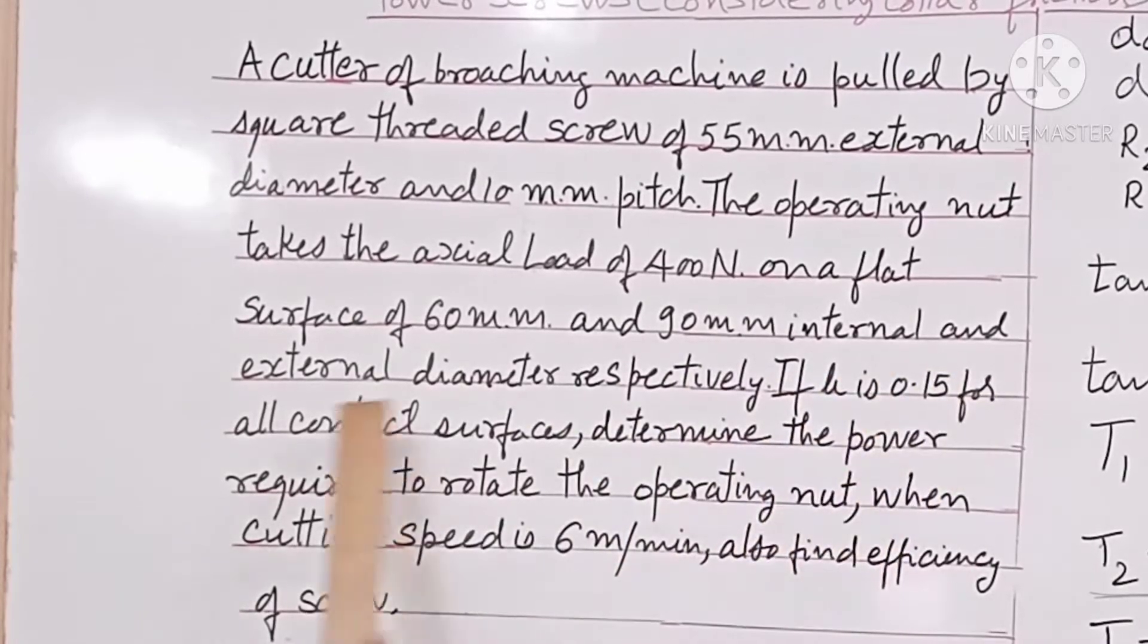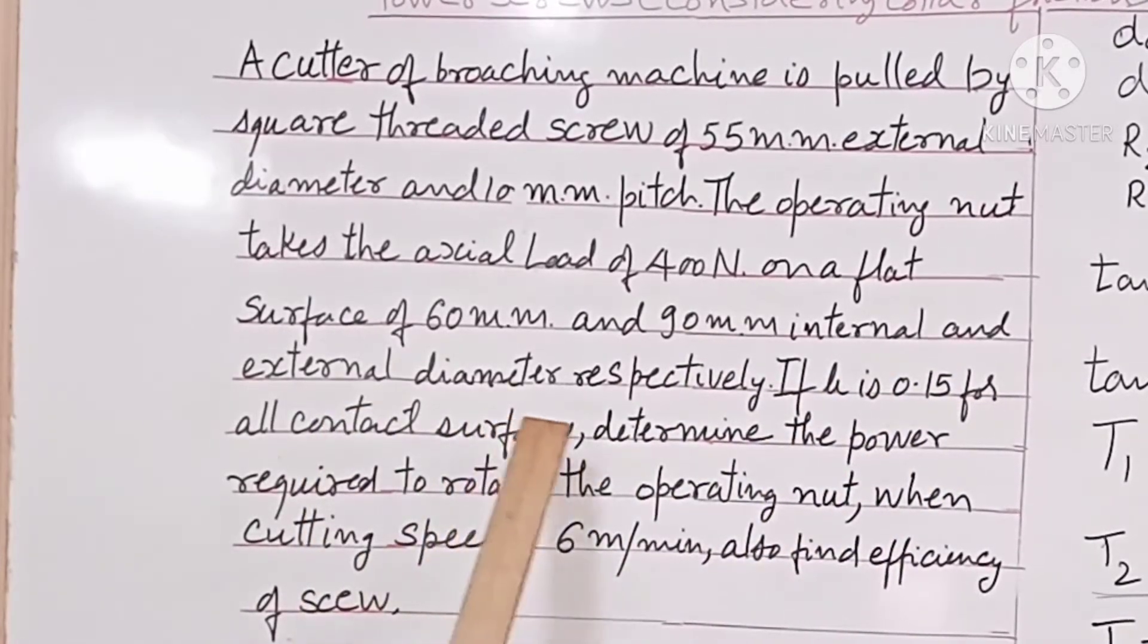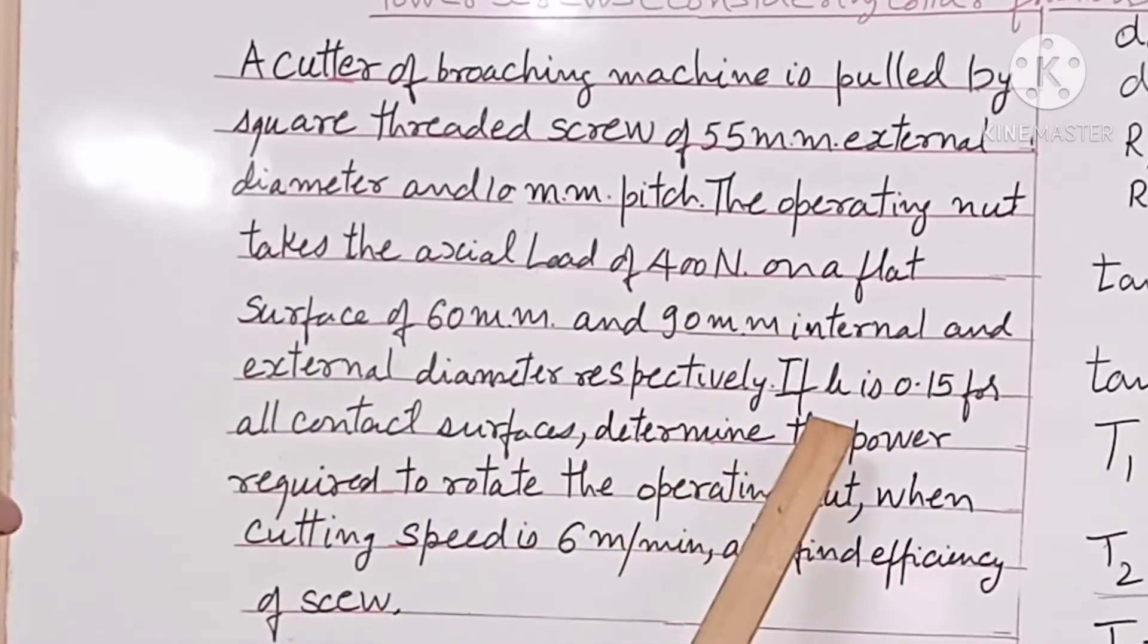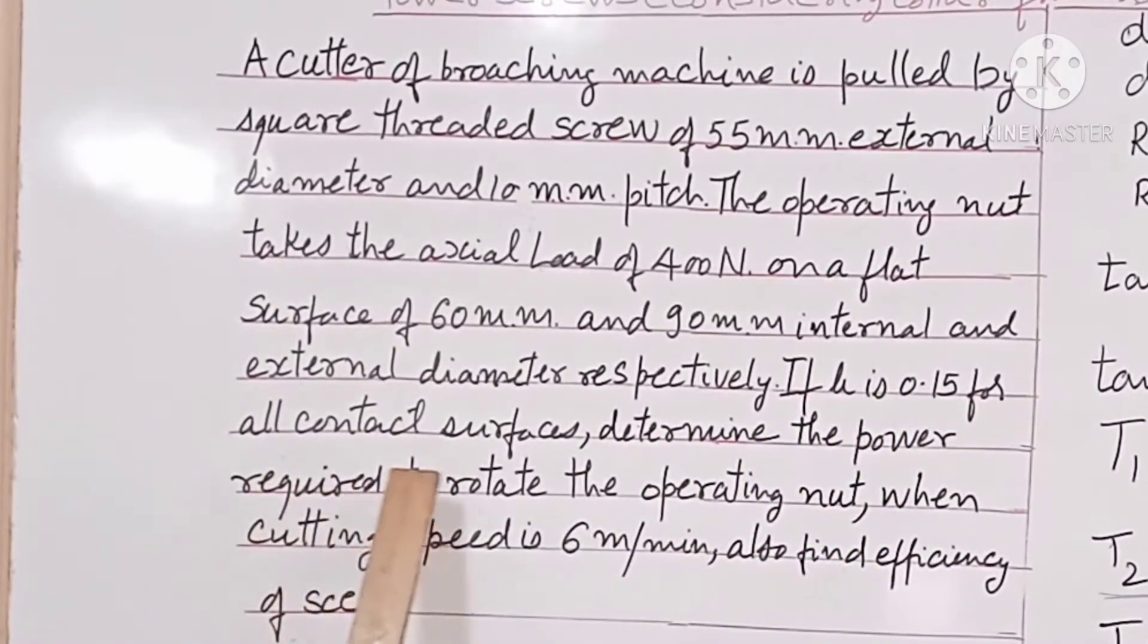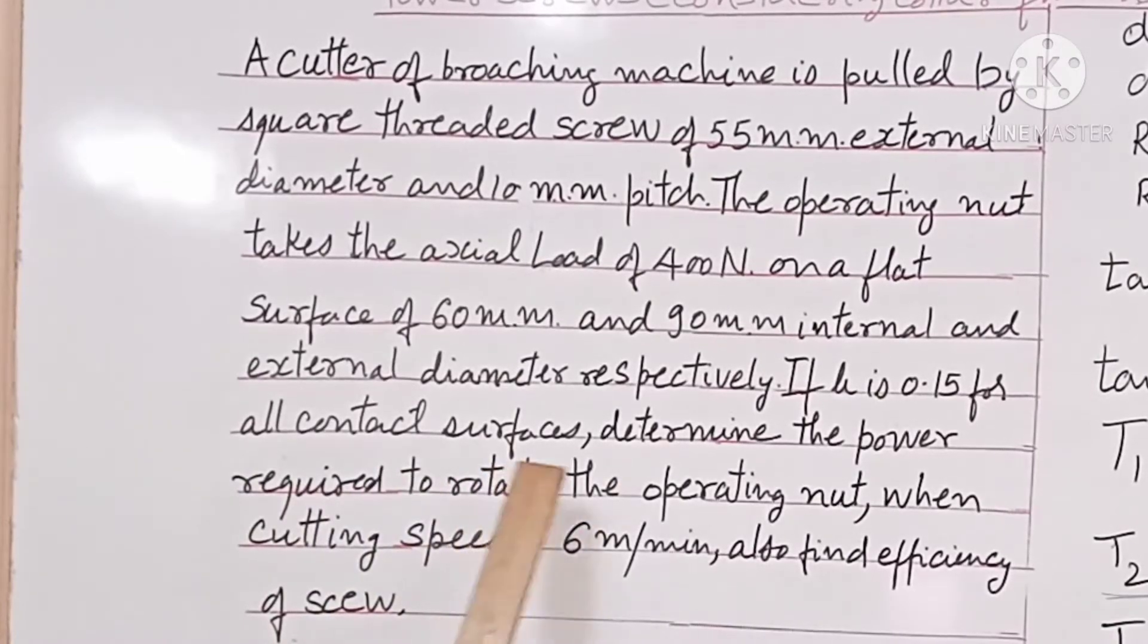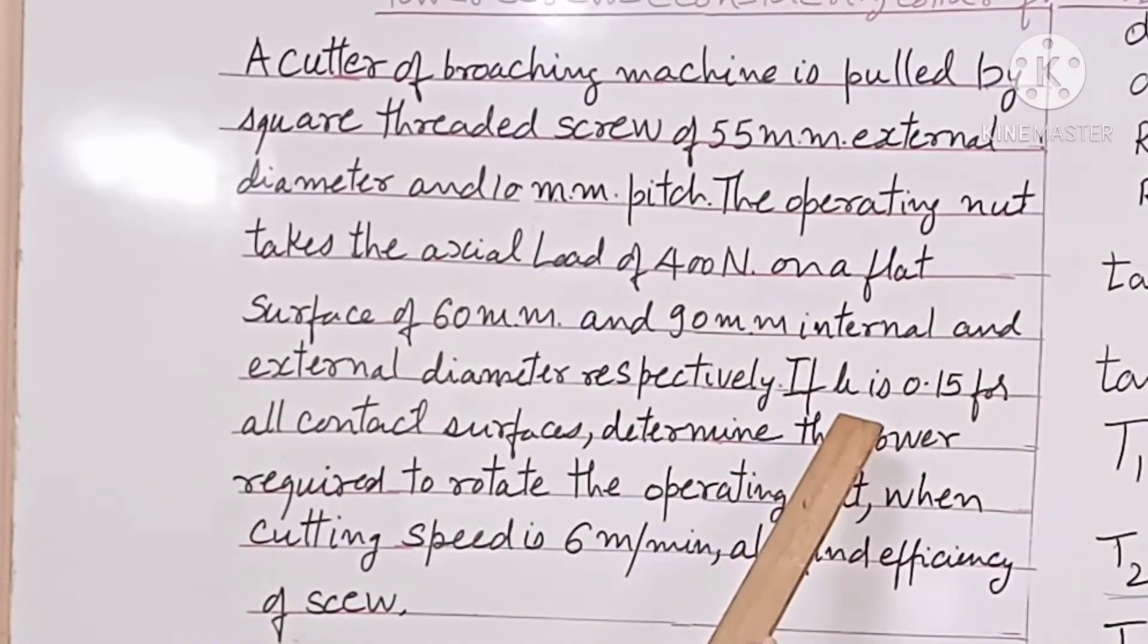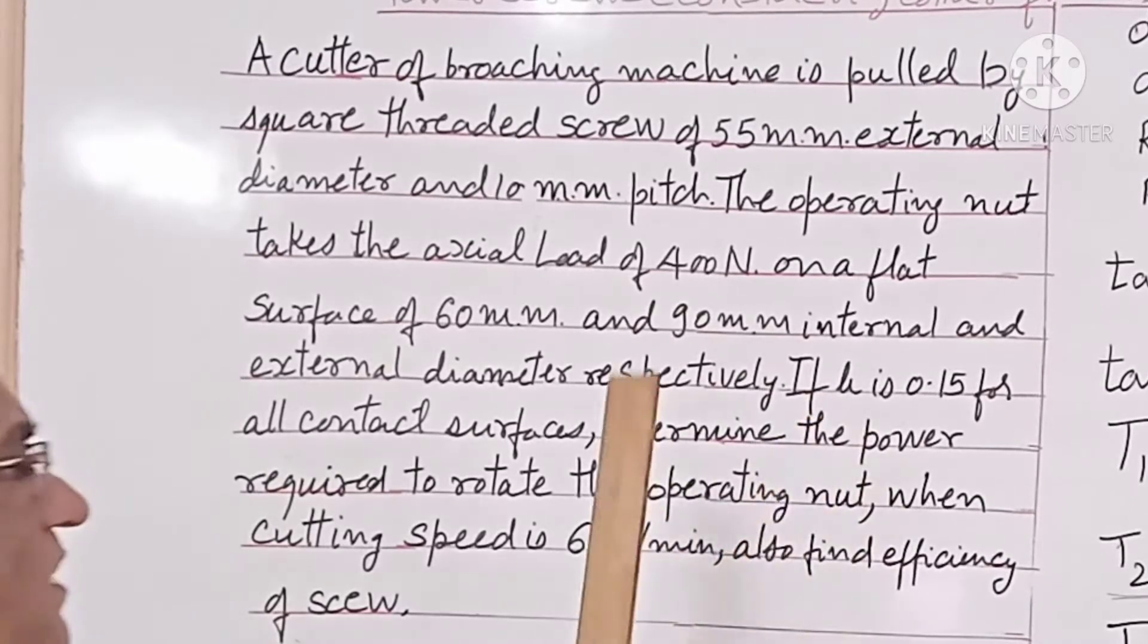If mu is 0.15 for all contact surfaces, meaning mu is equal to mu1, or thread friction is equal to collar friction.